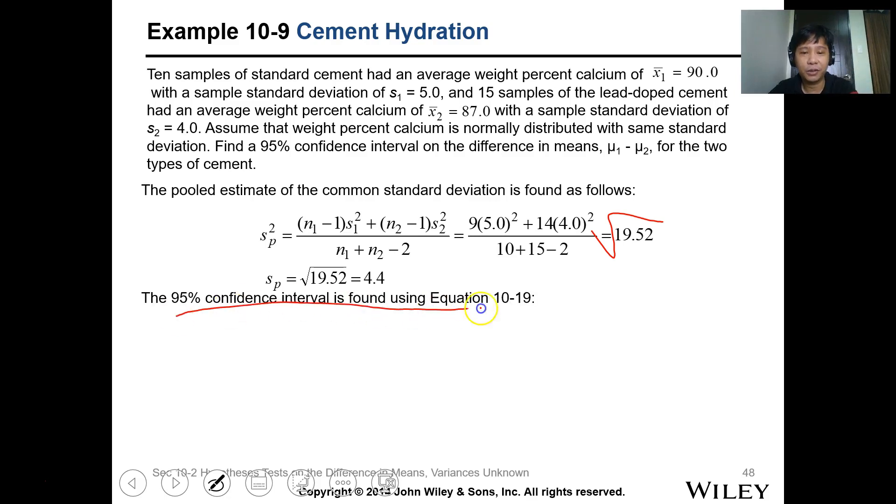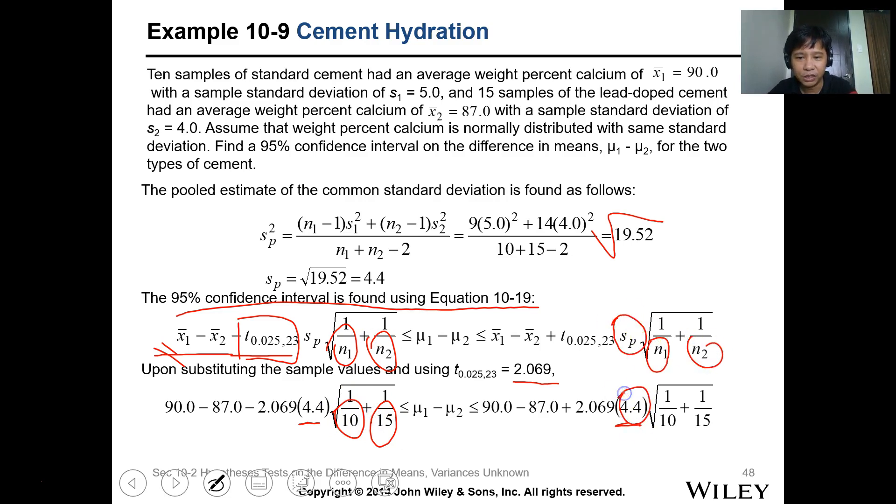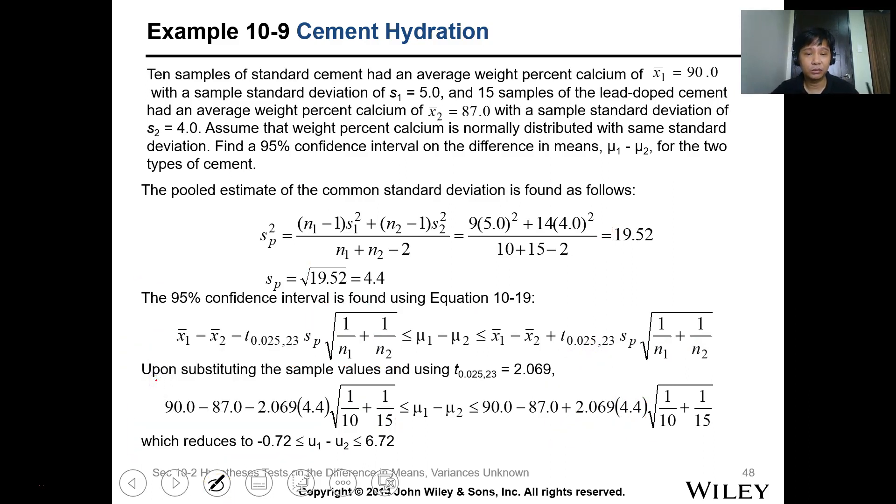Now we want to get the 95% confidence interval. So this is the expression, we know all of this. We got the t-value which is 2.069. So substitute everything: substitute sp here, the n1 and n2, sp is 4.4183, this is 2.069. So when you get the value, this will become between negative 0.72 to 6.70. So this is the difference of the interval.